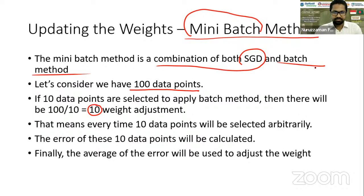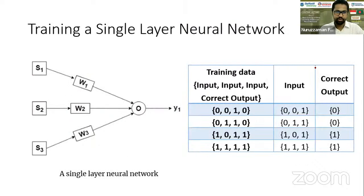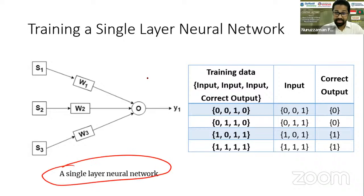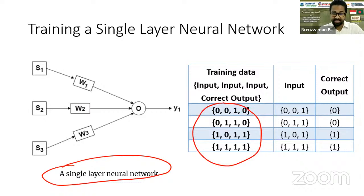We have now covered everything we need to know before being practical: what is a node, how signal flows, how a node processes signal, what is an activation function, how the network learns, and how to train the network. We are ready to delve into the practical session — training the network. We need the network first. We are going to train a single neural network using a dummy training dataset. Once you have the basics and a solid foundation, you can use your own dataset and train sophisticated networks.